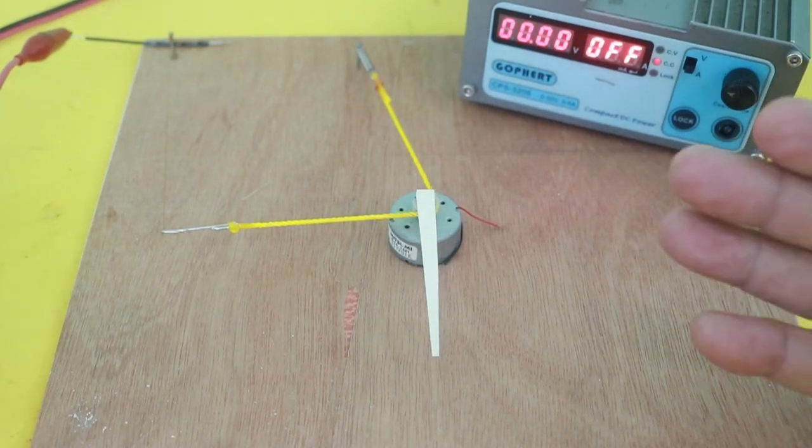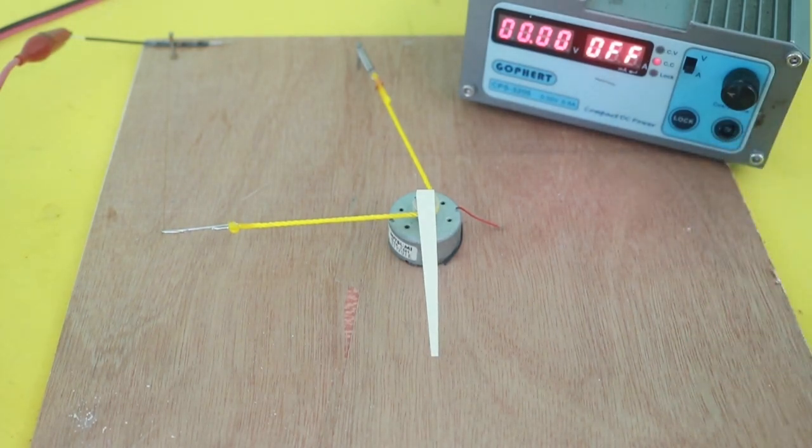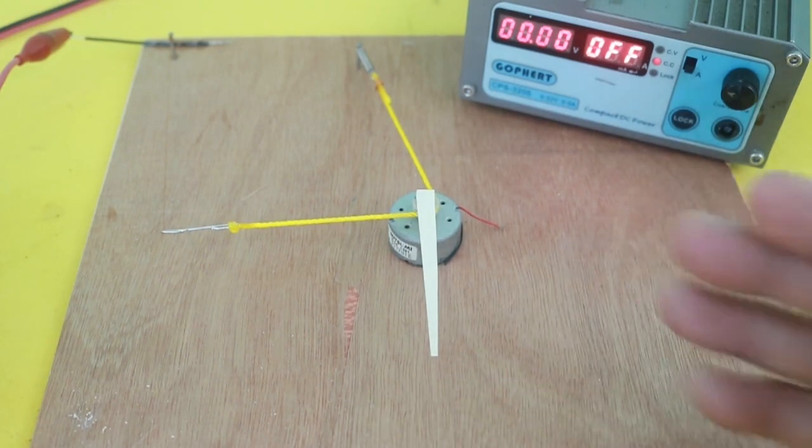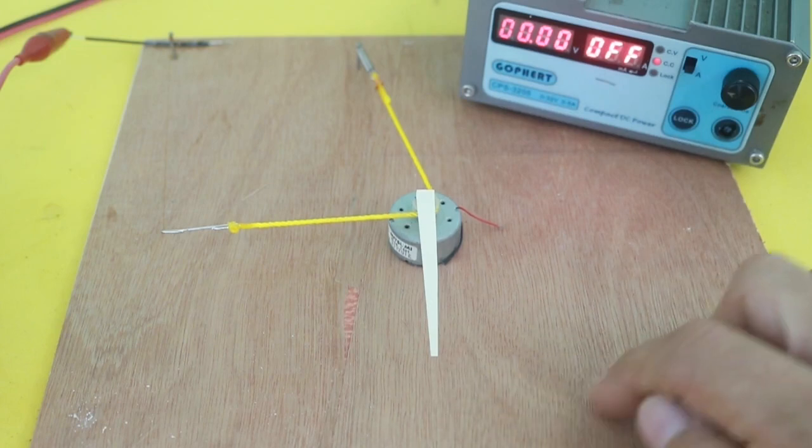In order to use it, of course, you need to calibrate it. You will mark a zero when there is no current and then you put different currents and mark the values on a scale.